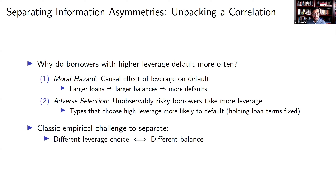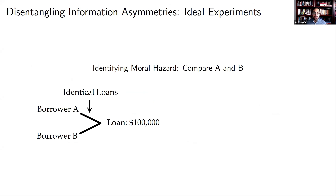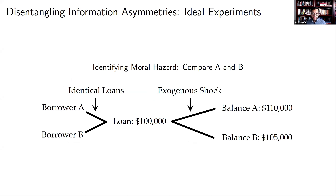One is moral hazard — higher balances causally induce borrowers to default because they have more leverage. Or it could be adverse selection — riskier borrowers are taking on more leverage and as a consequence are more likely to face default. This is the classic problem of disentangling information asymmetries: different ex-ante choices of leverage also result in ex-post different balances. To think about an ideal experiment for moral hazard: consider two borrowers with identical $100,000 loans. Some shock causes borrower A to have a higher balance than borrower B. If we then observe higher default by borrower A, we know higher balance causally drives default — they took identical loans ex-ante.